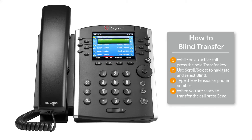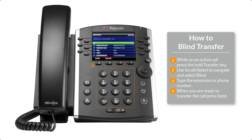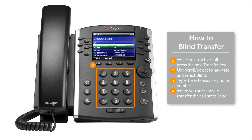To facilitate a blind transfer, you must be on an active call. Press and hold the transfer button until you see the transfer select screen. Using your scroll select tool, navigate to blind and select it. Type the extension number or the 10-digit phone number that you would like to transfer the call to, then press send.